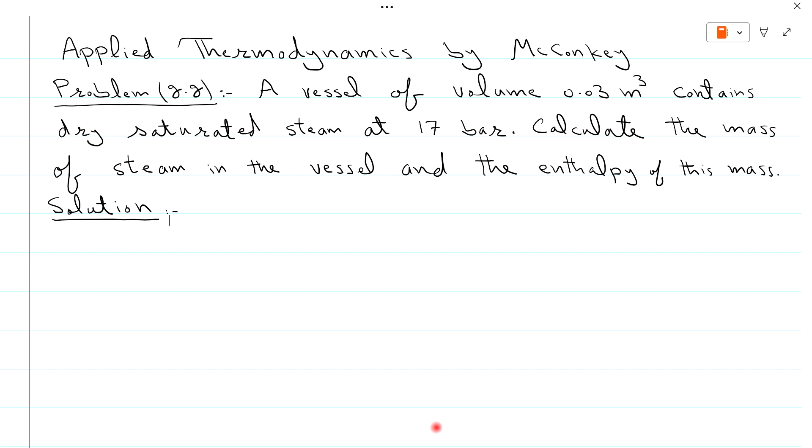In current lecture we are solving problem 2.2 from Mekanki. Problem 2.2 is: a vessel of volume 0.03 cubic meter contains dry saturated steam at 17 bar. Calculate the mass of steam in the vessel and the enthalpy of this mass.